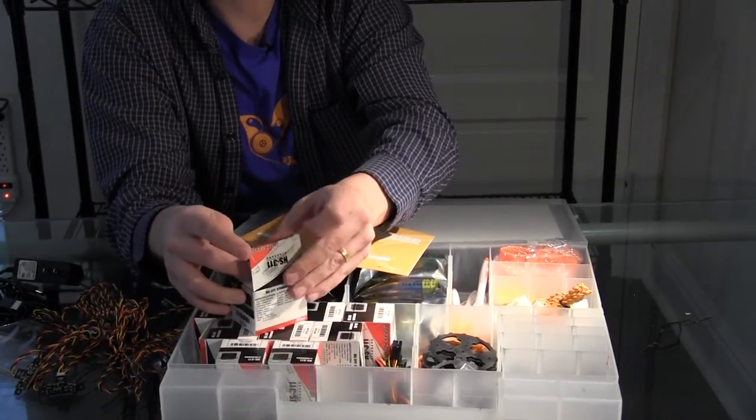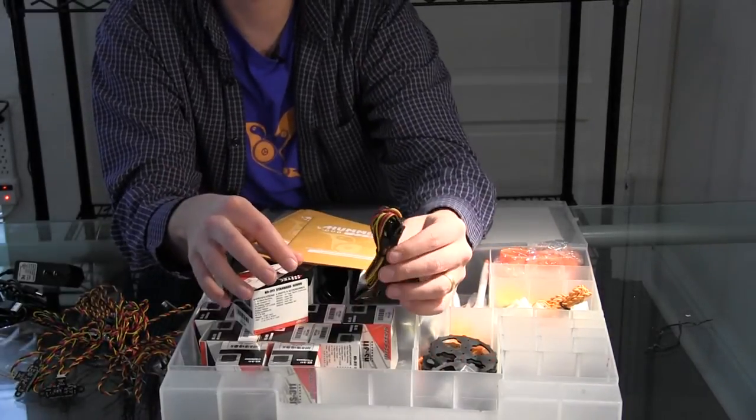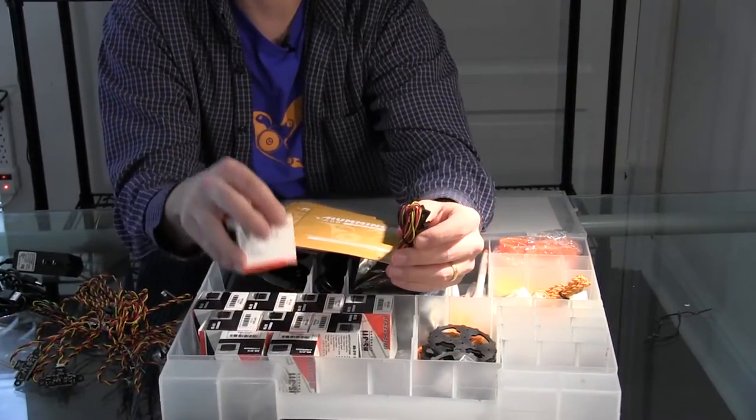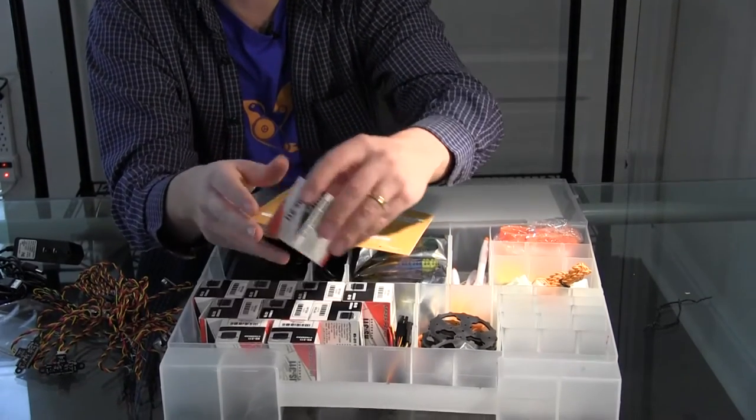The servos, the ten servos come with six servo extension cables so that you can put the servos further away from the controller if you need to make a fairly large robot.